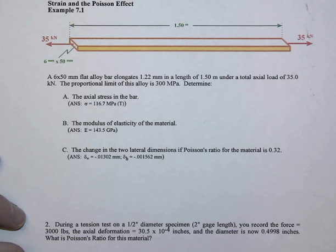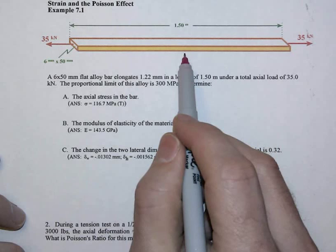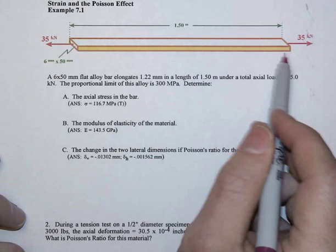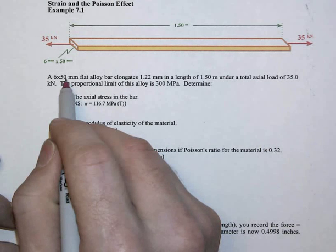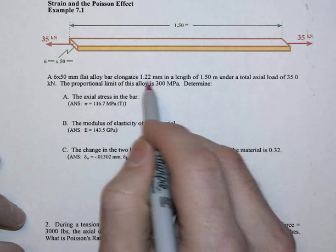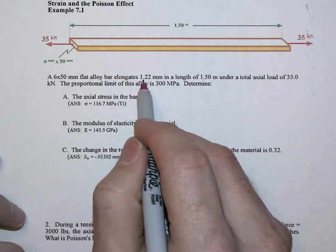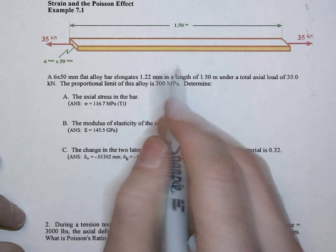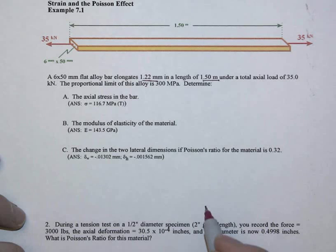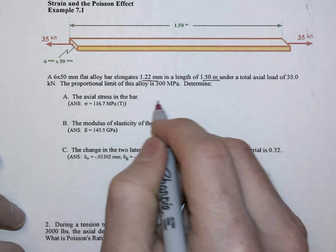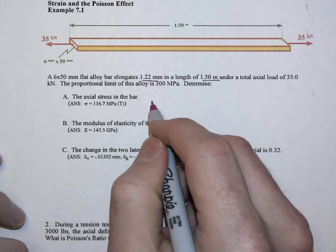But what we're really focusing on in this particular example is that when we pull on this bar, we actually get elongation, but we're also going to get shortening of that bar in the other direction. This 6 by 50 millimeter flat alloy bar under a 35 kilonewton axial load has elongated by 1.22 millimeters, and that original length was 1.5 meters. Those are going to be keys as we go through this particular problem.